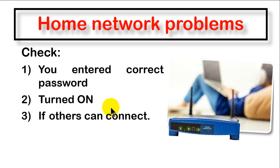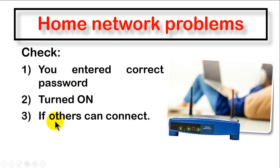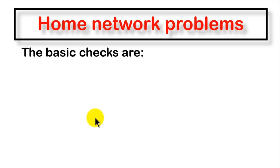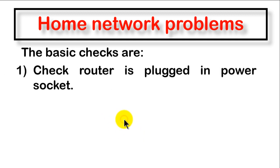Another way to check: if you have Wi-Fi at home but cannot access it, and you are sure you entered the correct password and your Wi-Fi icon is on, ask other people if they are connected. If others are connected, you still have a problem on your own device. If others also cannot connect, then the problem is with the Wi-Fi router itself.